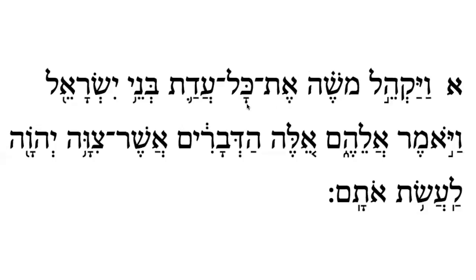This is a kaf with a kamats. Usually in modern Hebrew this says 'ah,' but in ancient Hebrew it said 'oh,' and with this word that 'aw' sound is preserved. Then a lamed making an L sound: 'khol.' This means 'entire,' 'all,' or 'whole' — sometimes 'each' or 'every.' Here we translate it as 'the whole' or 'the entire.'